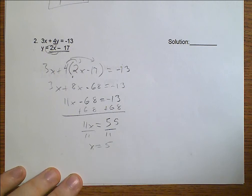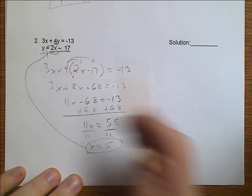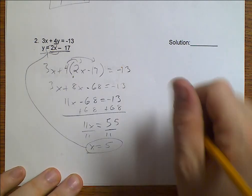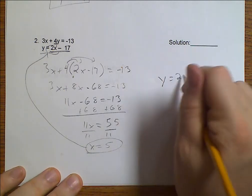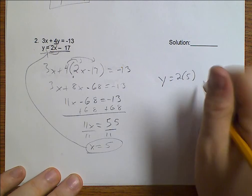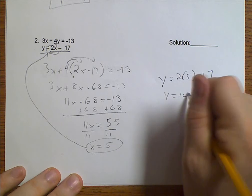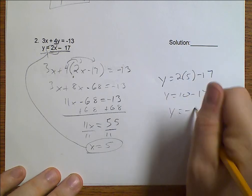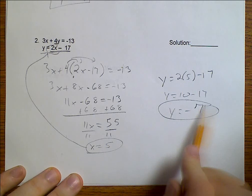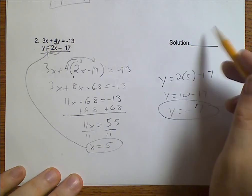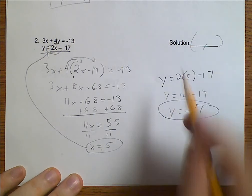Now that we know what X equals, we plug it back into our other equation. Y equals 2 times 5 minus 17. Y equals 10 minus 17. Y equals negative 7. Again, our solution is an ordered pair with X first and then Y.